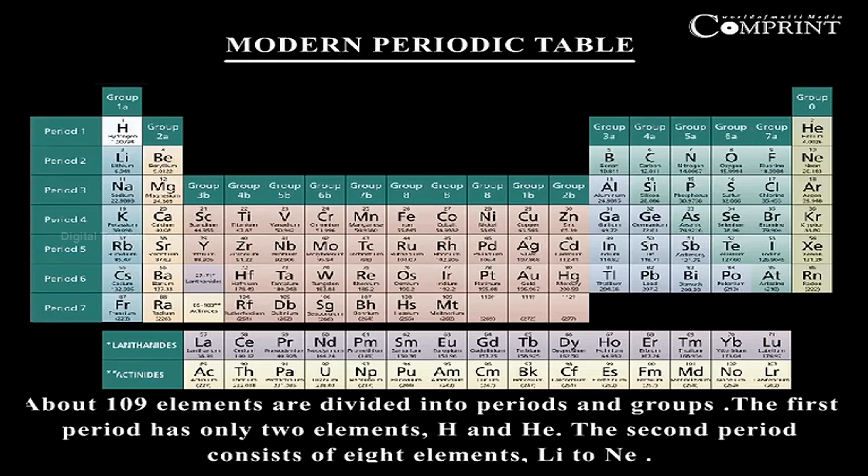Modern periodic table, also known as the long form of the periodic table. About 109 elements are divided into periods and groups.